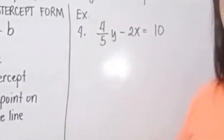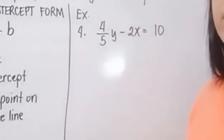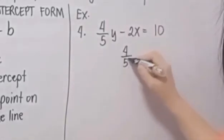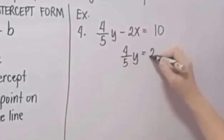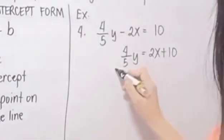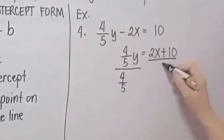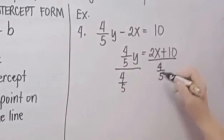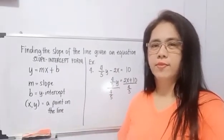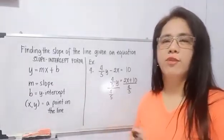Let's have the last example. As you can see, there is a fraction: four-fifths Y minus 2X is equal to 10. This becomes four-fifths Y is equal to 2X plus 10. Now we divide both sides by four-fifths. This is the problem for most students — fractions. What we are going to do is apply the rule of division.